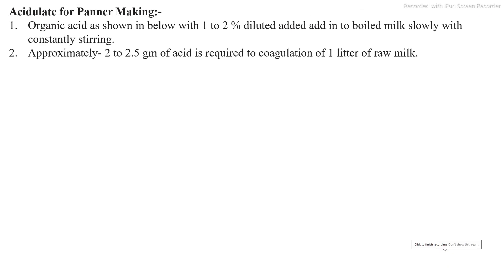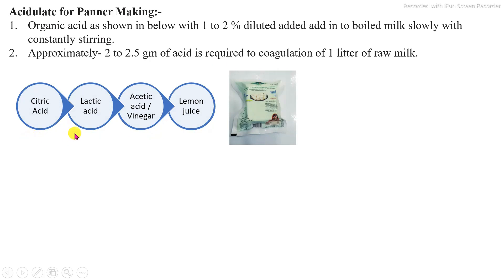The acidulant used for the paneer production process is mostly organic acids in the range of 1–2% diluted solution, added into the boiling milk slowly with continuous stirring. Approximately 2 to 2.5 grams of acid is required for the coagulation of 1 liter of milk. The main acidulants are citric acid, lactic acid, acetic acid (vinegar), and lemon juice. At industry level, citric acid or lactic acid is used; at home scale, lemon juice or vinegar is used.